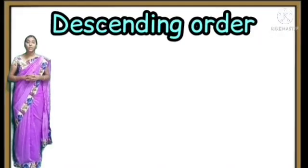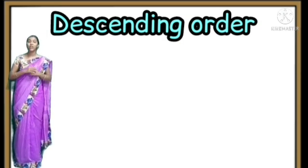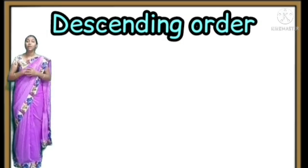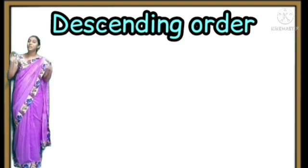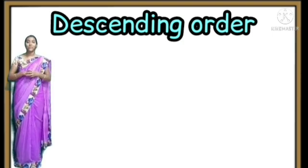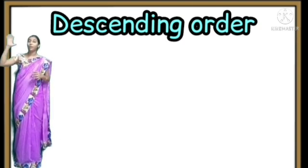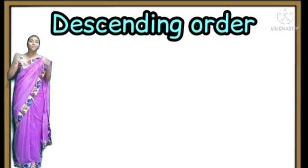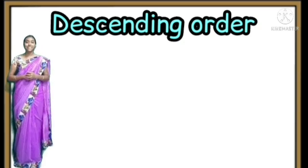Now the next topic is descending order. Descending — getting down. We are going to write the numbers from the biggest one to the smallest one. Remember: from the big number to the small number — that is descending order.